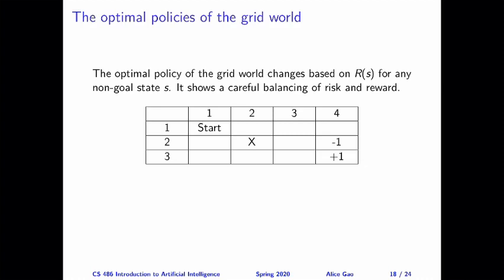When I introduced the grid world, I specified a particular value for the reward function R. I said the reward of entering every other state other than the goal state is a small negative number, so minus 0.04. But in fact, if we're willing to change this reward, then we're going to observe very interesting things.